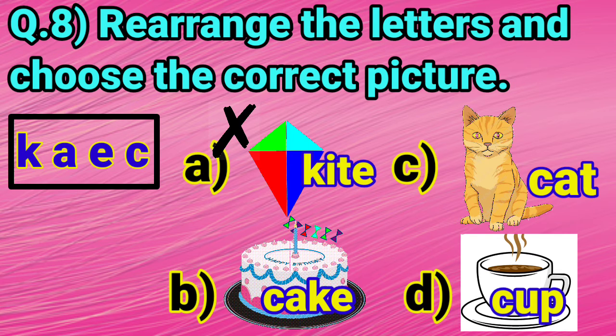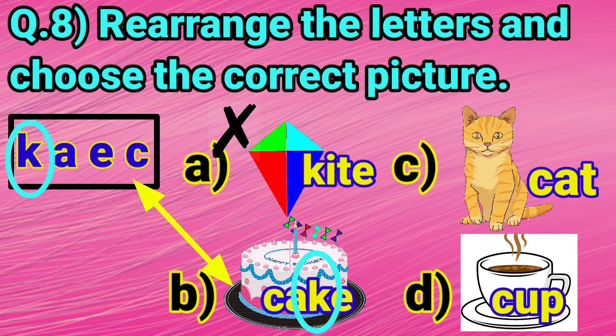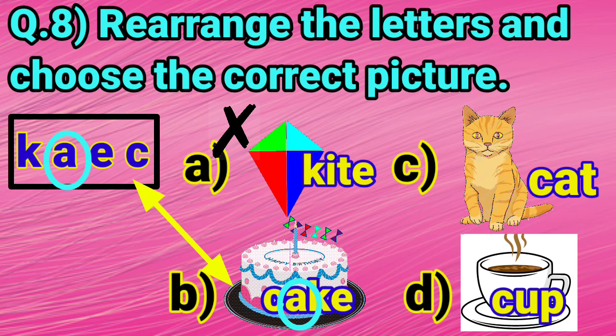Now, we will match the given letters with option B. Let's match the given letters with the letters of option B. K, same. A, yes, it is also there. E, yes. C, it is also same. All the letters are matching. So, the answer is cake. C, A, K, E.